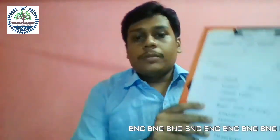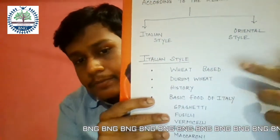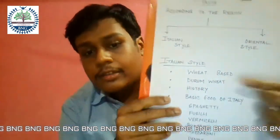In this video, we are going to discuss Italian style pasta and its characteristics. Number one, ingredients. Most Italian pastas are wheat-based. Other ingredients used are water, eggs, vegetables, vegetable purees, dried and fresh herbs, and flavouring agents. The preferred wheat is durum wheat, because it is a very hard wheat with a high gluten content.